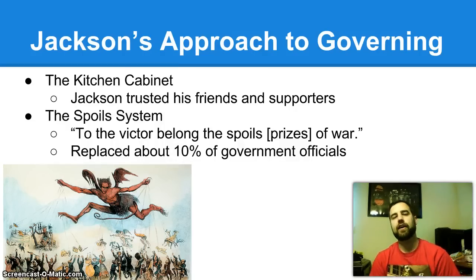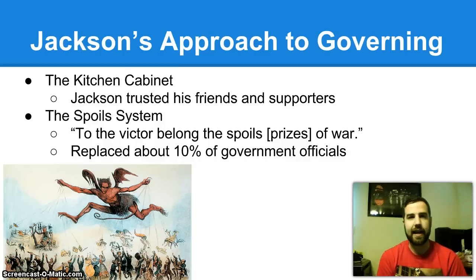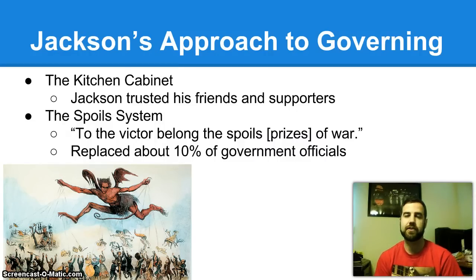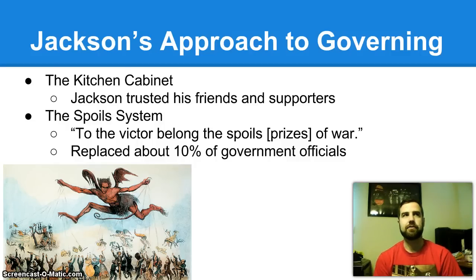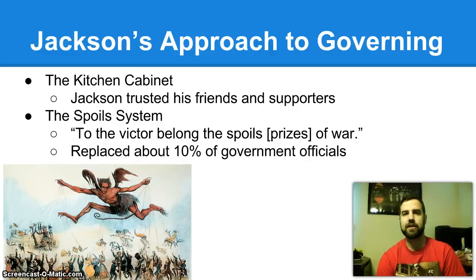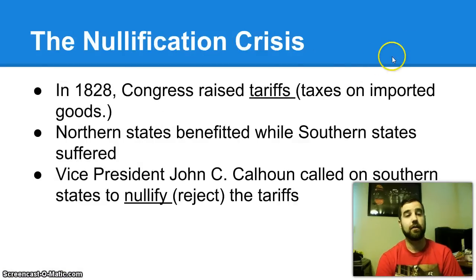Some officials Jackson removed were found to be unqualified or embezzling money, so he fired them. The spoil system gets its name from the idea that 'to the victor belong the spoils' — as president, you get to choose who holds those jobs. Today, government job applicants must pass tests to demonstrate their qualifications. As an interesting side story, a veteran — the postmaster general, if I recall correctly — who had fought in the Revolutionary War came to Jackson begging to keep his job, showing his injuries. Jackson said this man had done so much for the country and allowed him to keep his job, showing sympathy for fellow veterans.